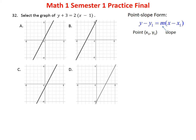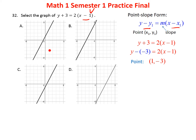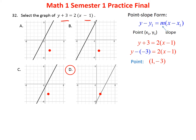Problem thirty-two is in point-slope form with slope 2 and point (1, negative 3). Be careful: the formula reads y minus the y-value and x minus the x-value, so here the point is (1, negative 3). Checking which graph has the point (1, negative 3) on the line — it's on graph D. The answer is D.